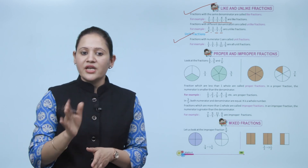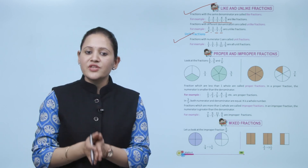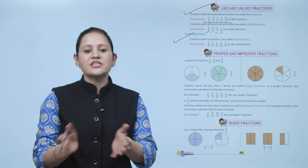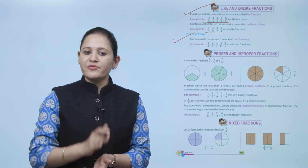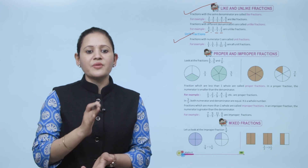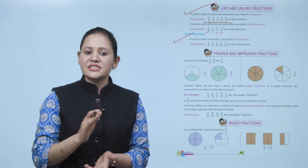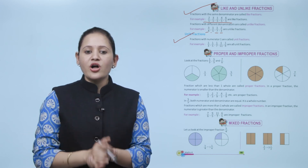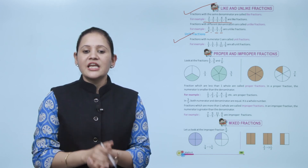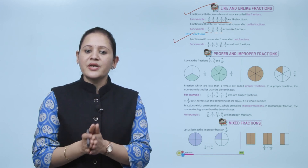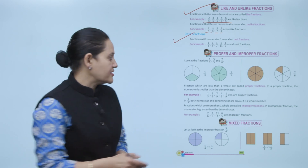Unit means 1. A fraction with numerator 1 is called a unit fraction. For example, 1 by 3, 1 by 5, 1 by 7 — all these are unit fractions. Next is proper and improper fractions.